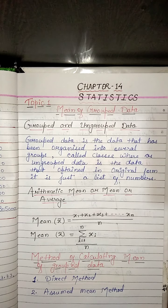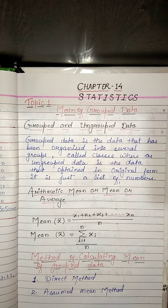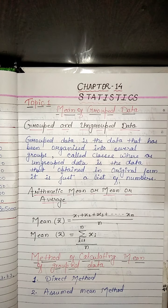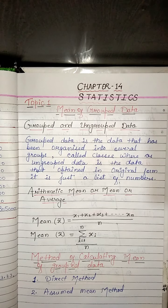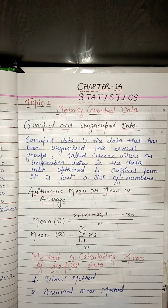In the previous class, we studied the classification of the given data into ungrouped and grouped frequency distributions, representing data such as bar graphs and histograms, frequency polygon, and mean, median, and mode for ungrouped data. In this chapter, we shall extend the study of measures of central tendency — mean, median, and mode — from ungrouped data to grouped data.